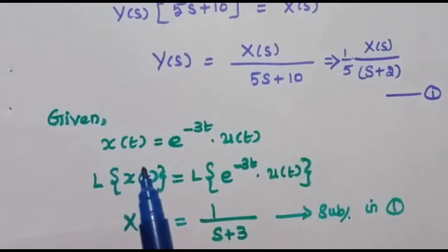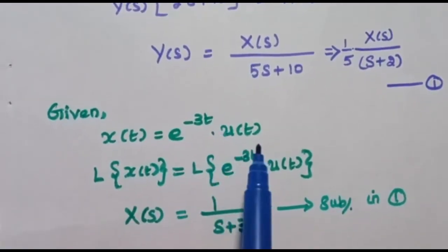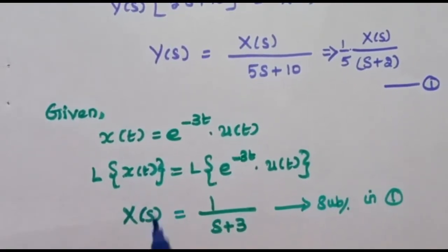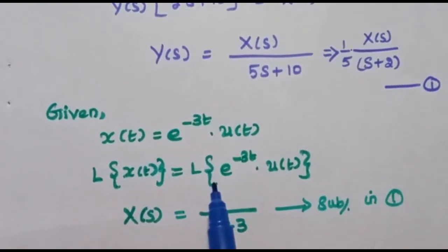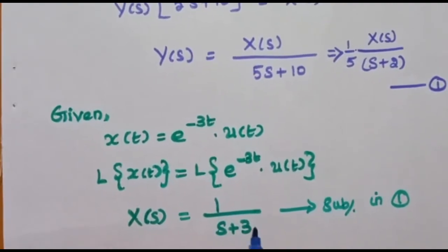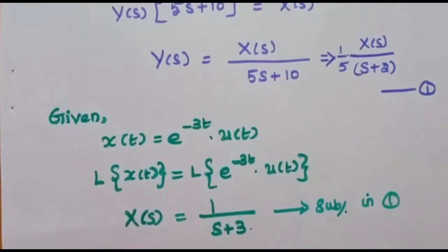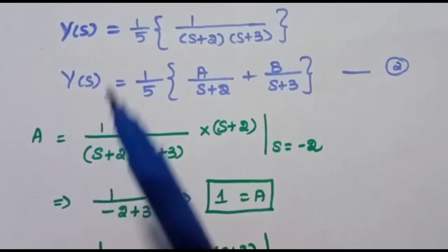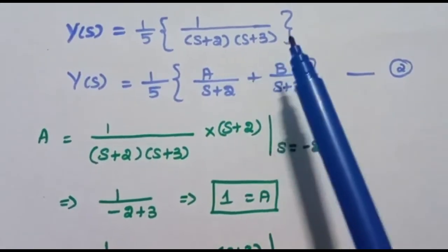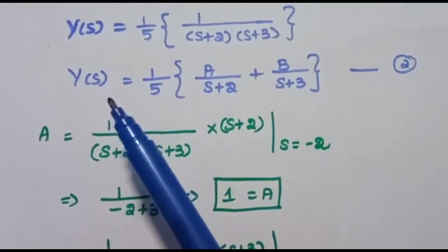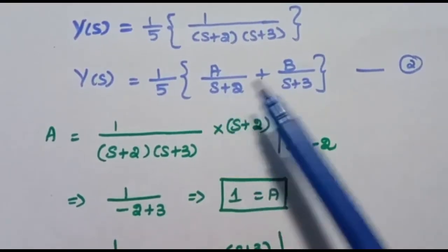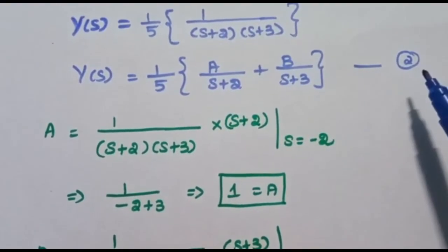Next, we find X of s. Since x of t is e power minus 3t times u of t, its Laplace transform is X of s equals 1 by s plus 3. Substituting into the first equation, Y of s equals 1 by 5 times 1 over s plus 2 times s plus 3. Using partial fractions, Y of s equals 1 by 5 times A over s plus 2 plus B over s plus 3. Call this the second equation.